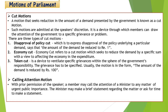Now we will discuss the Cut Motion. In this, the amount of demand put forward by the government is reduced. There are three types. First is the Disapproval of Policy Cut — in this proposal, the government's policy is opposed, and it is proposed that the demand amount be reduced to one rupee. Second is the Economic Cut — its purpose is to reduce government expenditure; it is proposed that the demand amount be reduced by a specified amount. The opposition uses this to condemn the government. Third is the Token Cut — its purpose is to point out a specific grievance in the budget; it is proposed that the demand amount be reduced by 100 rupees.